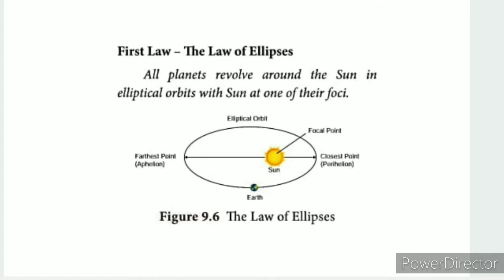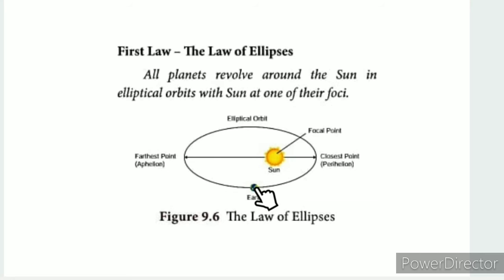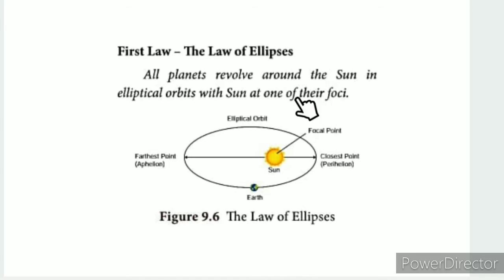Let's look at the first law fully stated: all planets revolve around the sun in elliptical orbits, with the sun at one of their foci. Planets follow an elliptical orbit. The sun is a star at one of the two foci of the ellipse.